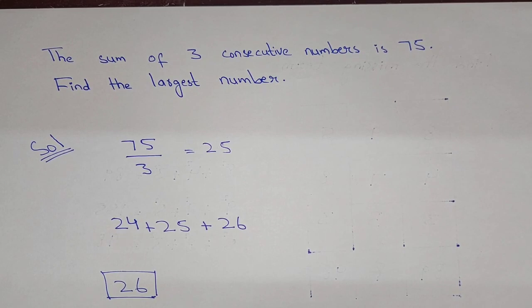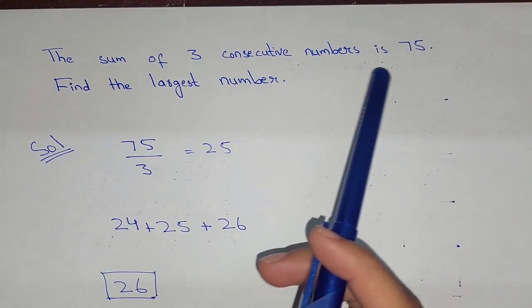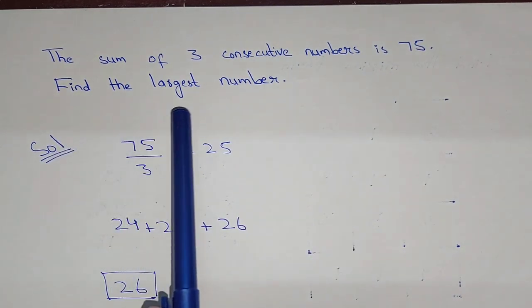This is a common problem that usually comes in quizzes, competitions, and MCQs. The problem says: the sum of three consecutive numbers is 75. Find the largest number.